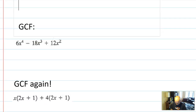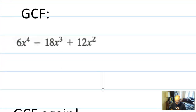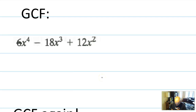The first thing I want to talk about with factoring is greatest common factors. Greatest common factors are things that are shared across all terms. In this expression, there are two different types of greatest common factors: numerical greatest common factors, and greatest common factors that involve an X. In the numerical part, I notice that 6 is a common factor of 6, 18, and 12, so I'm going to factor out that greatest common factor of 6.